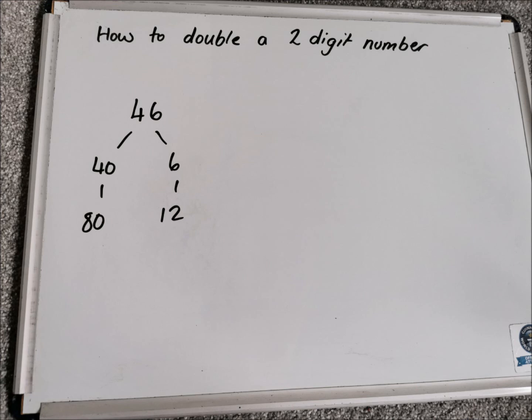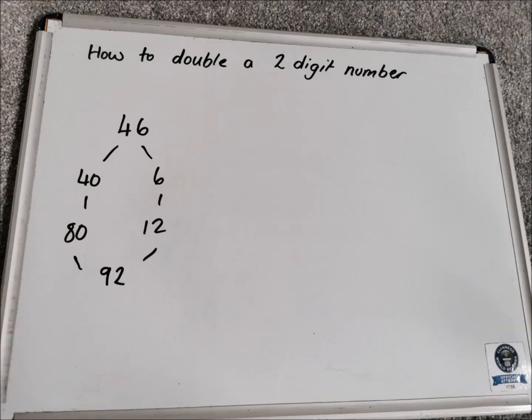Then what we need to do is bring the 80 and the 12 back together. We can use any addition strategy for this — we could do a chimney sum or we can do it mentally. Bringing 80 and 12 together gives us 92.